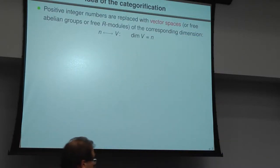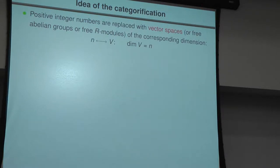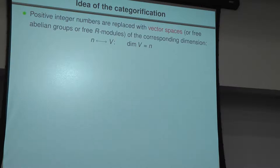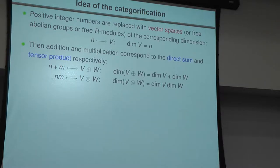Khovanov homology is a special case of categorification. Categorification tries to take something well-known and make it better — it upgrades the category you're working in. Instead of considering positive integers, you consider vector spaces, or free abelian groups, or free R-modules of the corresponding dimension. Knowing not just the dimension but the vector space itself gives you extra information. With numbers you can perform certain operations, and you want to perform corresponding ones on the objects you consider.